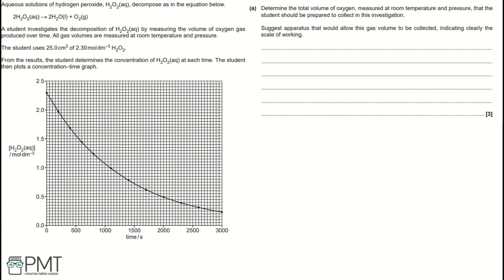Before we begin answering the question, there are a few key pieces of information we need to pay attention to. The first key piece of information is the molar ratio in the equation: H2O2 to O2 is a 2 to 1 molar ratio, meaning there are twice as many moles of H2O2 as there are of O2.